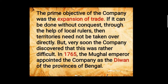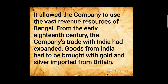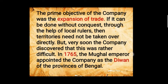So they thought to take control of that place. In 1765, the Mughal emperor appointed the company as the Divan of the provinces of Bengal, which allowed the company to use the vast revenue resources of Bengal. From the early 18th century the company's trade expanded, and goods from India had to be brought with gold and silver imported from Britain.